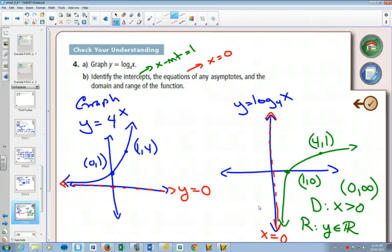So that's how you would graph all log graphs. If it was log base 5, everything would be the same, except instead of 4 comma 1, you'd have 5 comma 1. If you were graphing log base 7, you'd have 7 comma 1 instead of 4 comma 1.